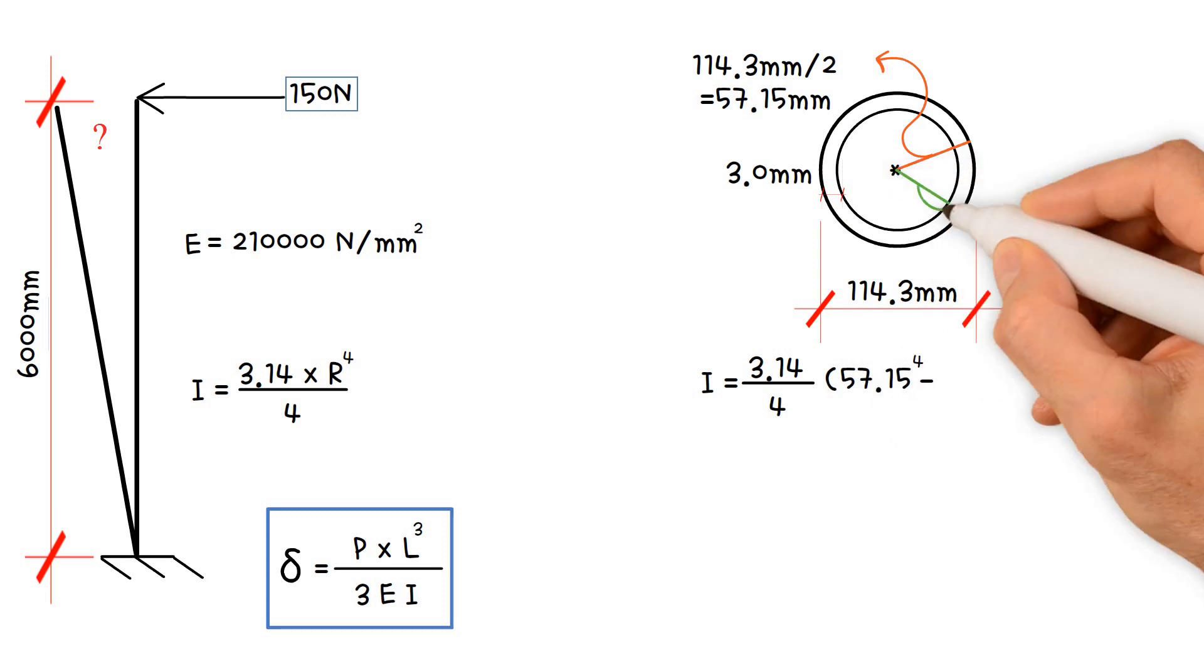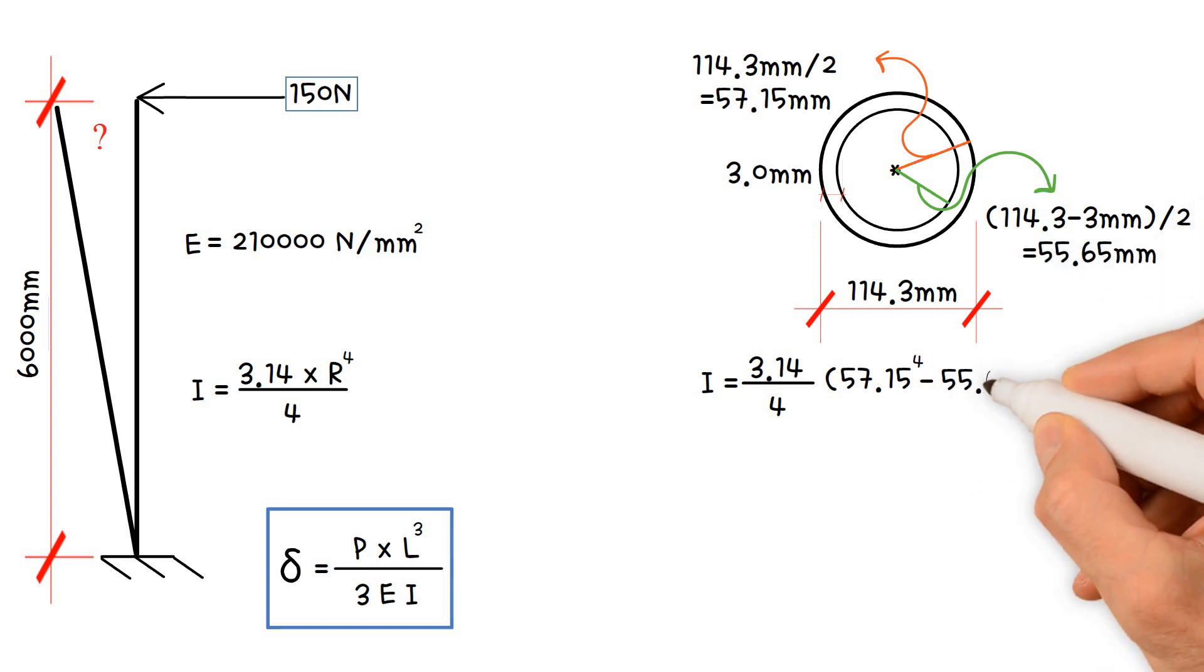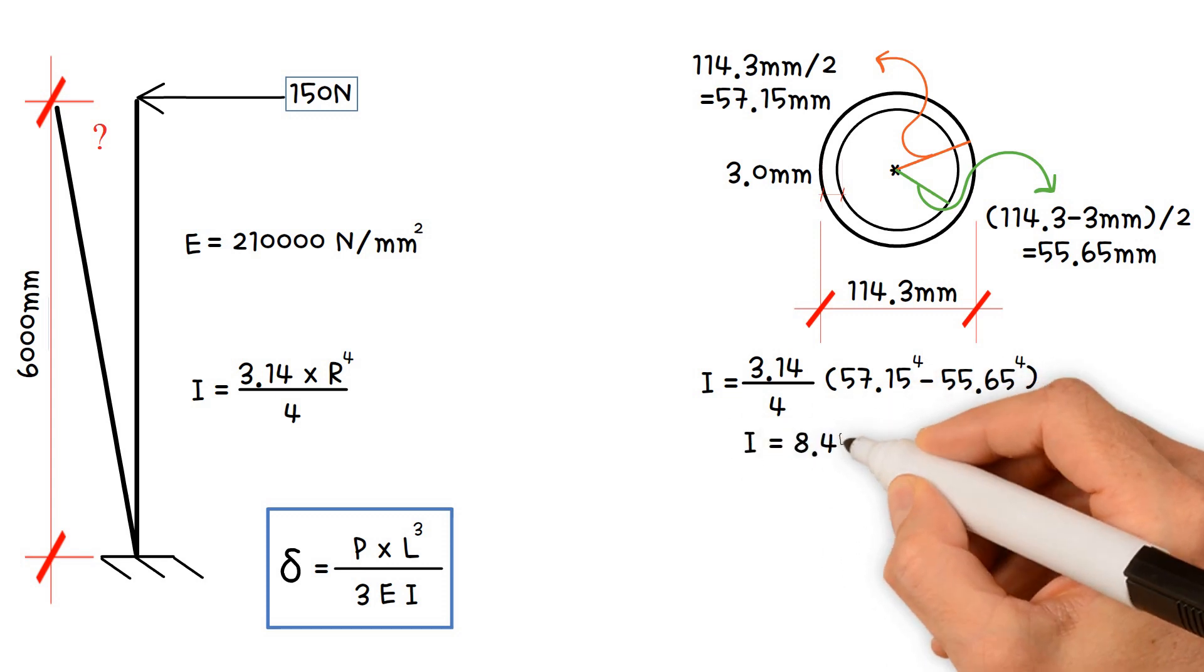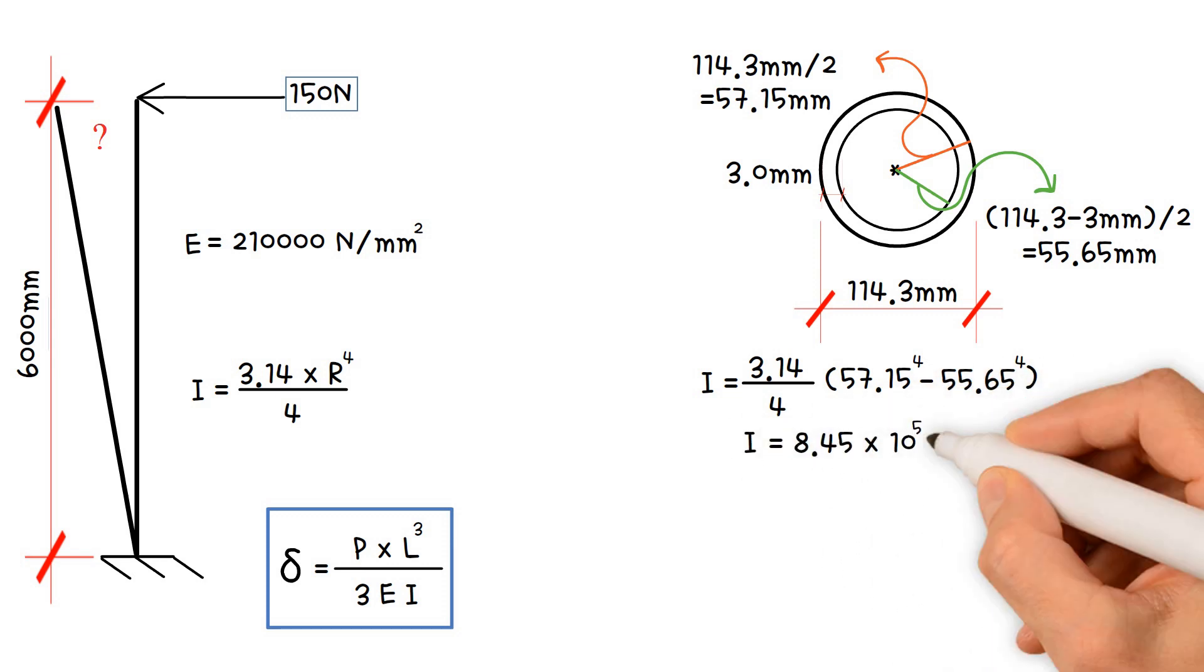Minus the internal radius, section diameter 114.3 minus the thickness 3 millimeters divided by 2, which equals 55.65 millimeters to the 4th. As a result, the area of inertia equals 8.45 times 10 to the 5 millimeters to the 4th.